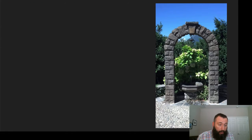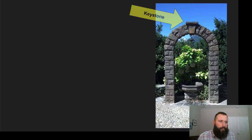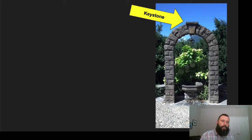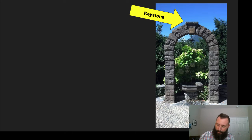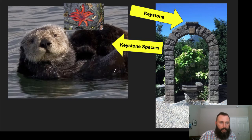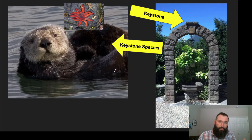Take a look at this image of an arch. Right at the very top, this is called the keystone. What the keystone does is it prevents all the rest of that arch — all those rocks — from falling down. The idea is that we can have keystone species that are just as important as that keystone rock is to that arch.